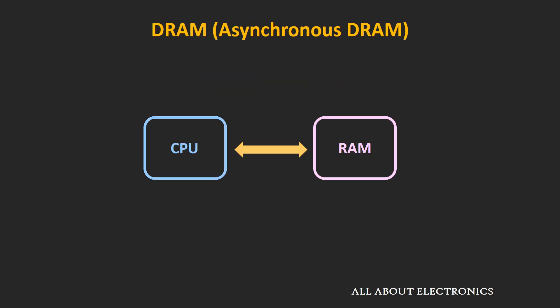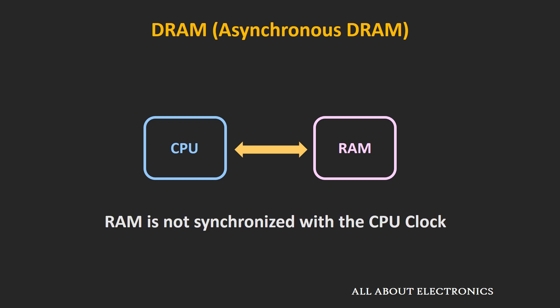The very old generation of dynamic RAM was the asynchronous dynamic RAM, meaning the RAM is not synchronized with the CPU clock. The disadvantage was that the CPU did not know the exact timing at which the data would be available from the RAM on the input-output bus.